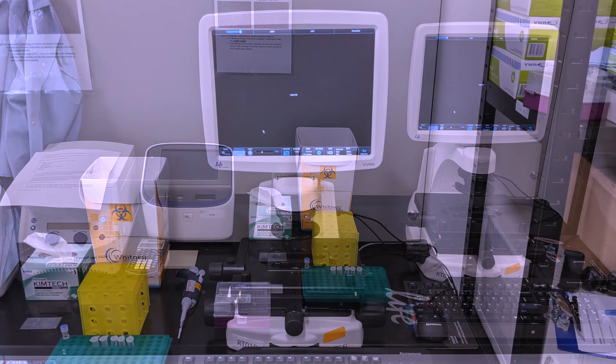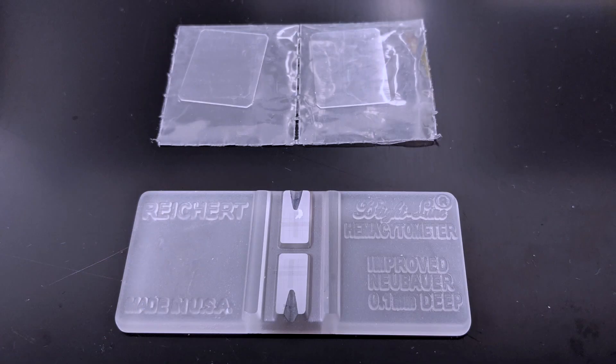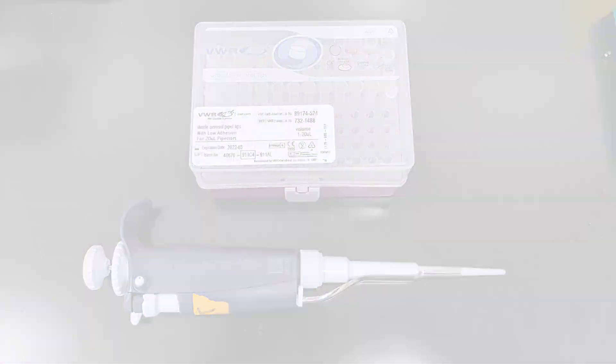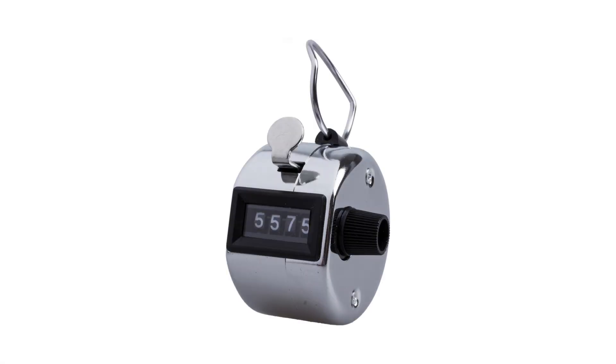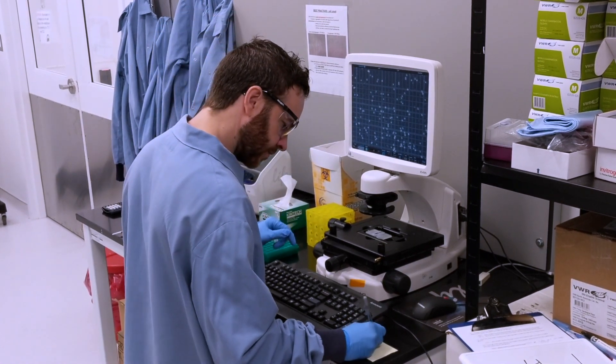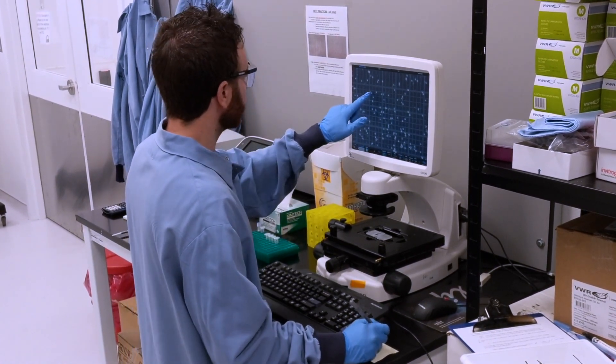To count cells, we will need a microscope, a hemocytometer, a micropipette with tips, and optionally, a cell counting device. If you don't have a cell counting device, you can simply keep track of your cell count with pen and paper.